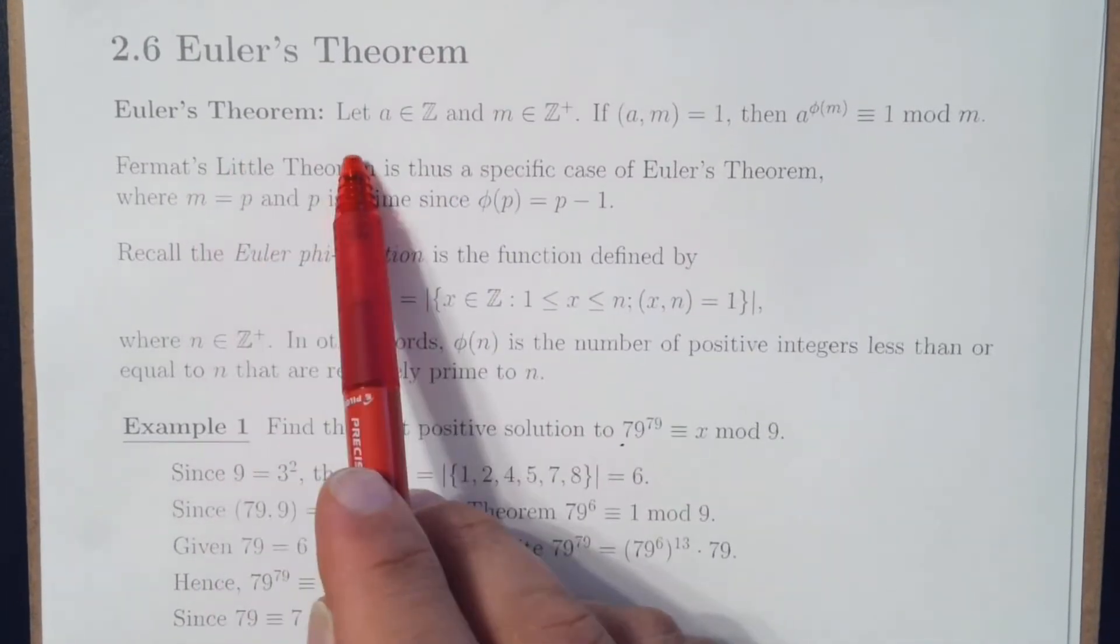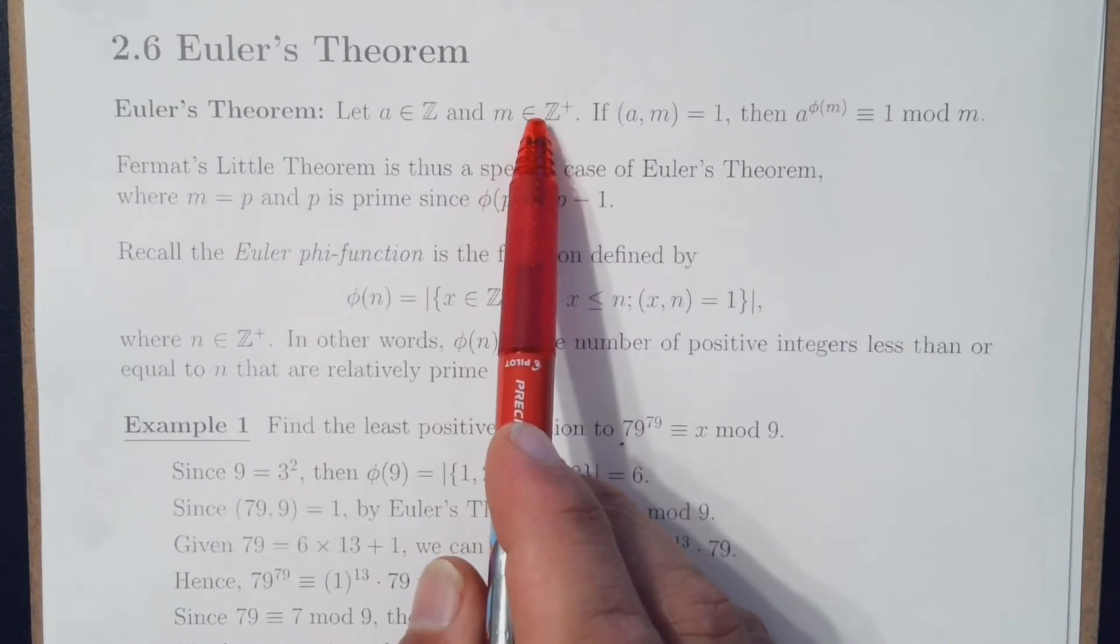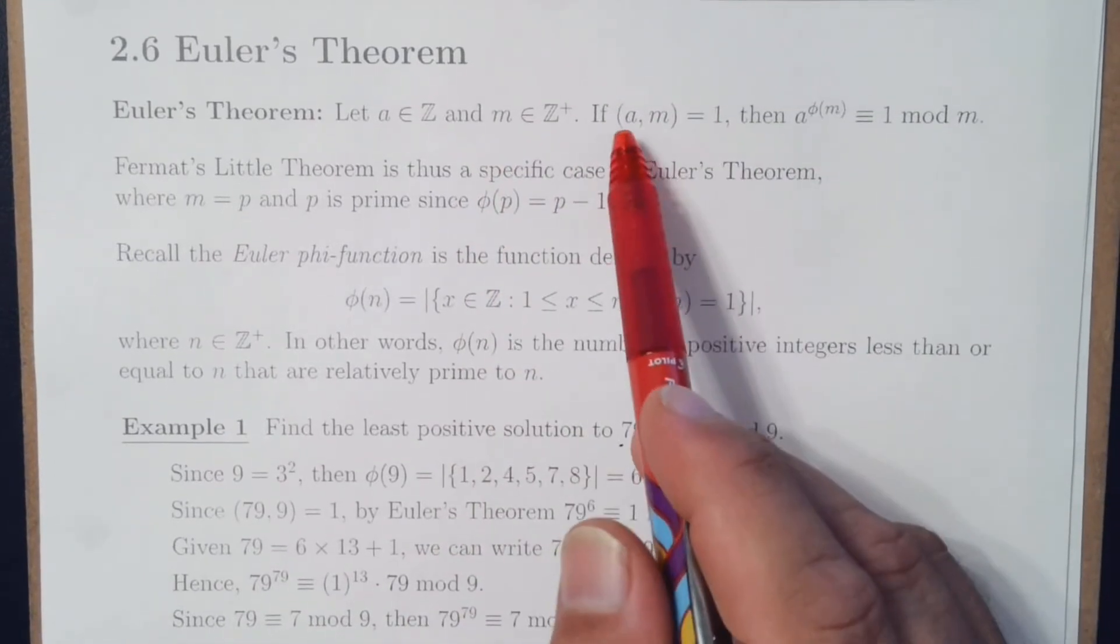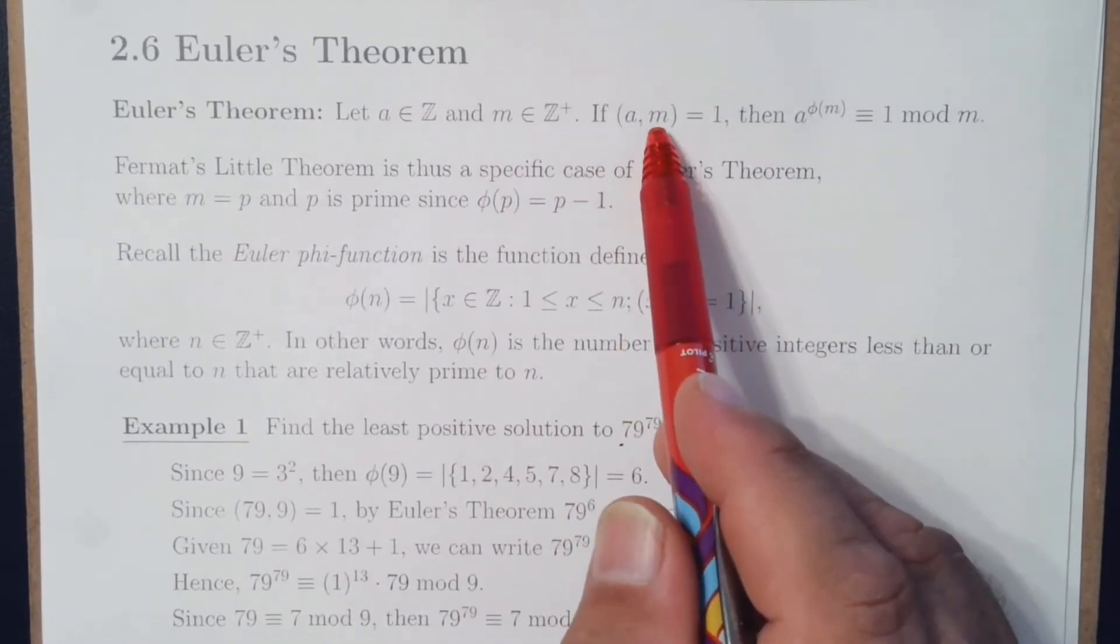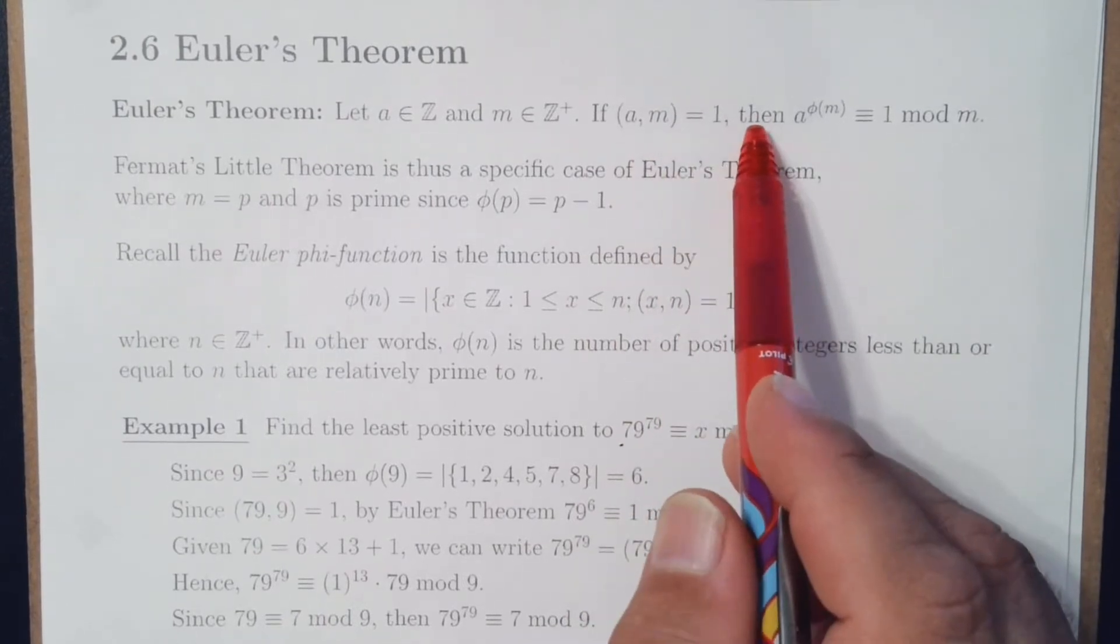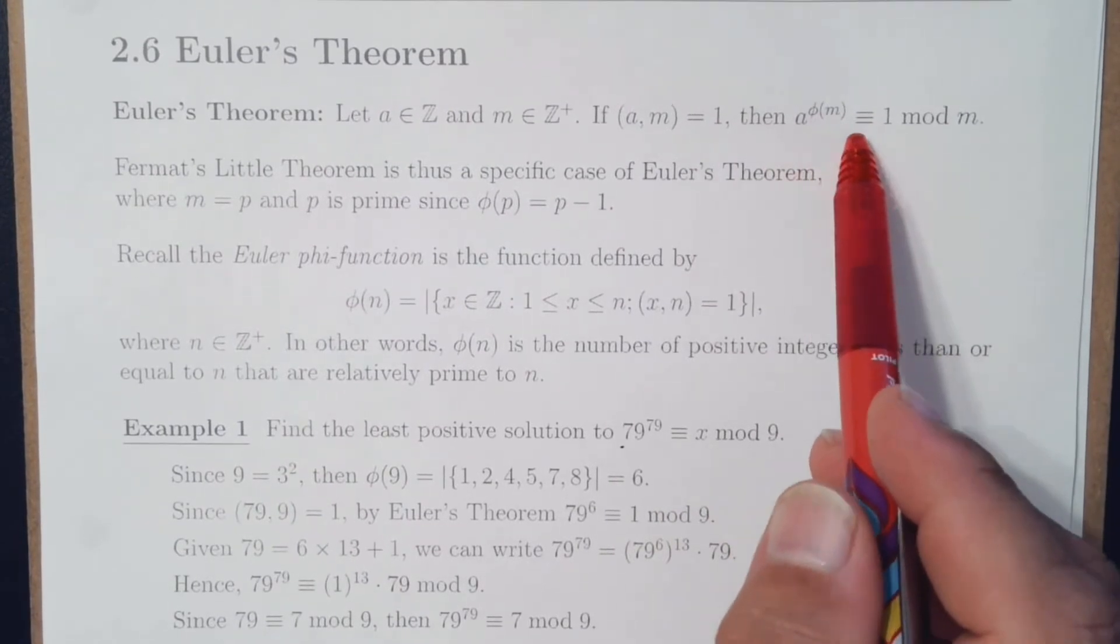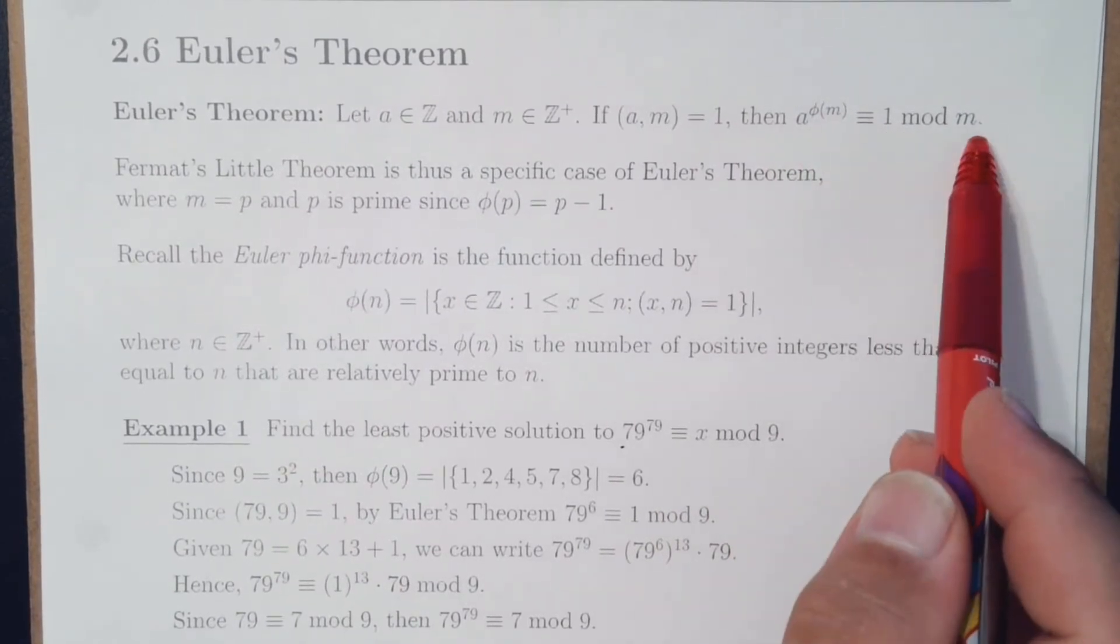Euler's Theorem tells us that if a is an integer and m is a positive integer, then if a and m are relatively prime, then a to the Euler phi function of m is equivalent to 1 mod m.